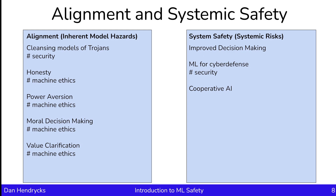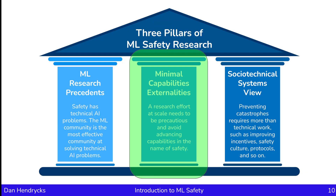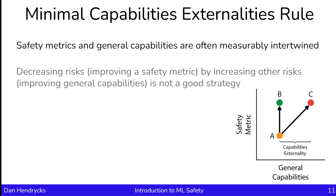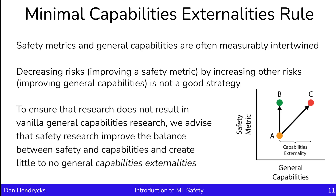Systemic safety has topics of machine learning for improving decision-making, ML for cyber defense, and cooperative AI. Another pillar of ML safety research is minimal capabilities externalities. Safety metrics and general capabilities are often measurably intertwined, so decreasing risks by improving a safety metric while increasing other risks — such as improving general capabilities — is not a good strategy. We advise that safety research improve the balance between safety and capabilities and create little to no general capabilities externalities.